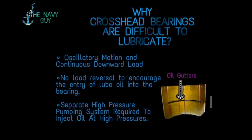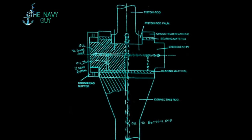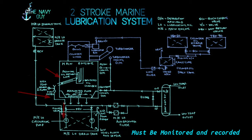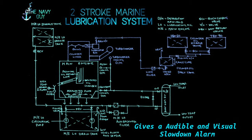A favorite interview question is: why are crosshead bearings difficult to lubricate? It is because of three reasons. Firstly, the oscillatory motion and continuous downward load with high sliding velocity makes formation of a hydrodynamic lubricating oil film difficult. Secondly, there is no load reversal to encourage entry of lube oil into the bearing, and rubbing speed is insufficient. Thirdly, a separate high-pressure pumping system is required to inject lube oil into the crosshead bearings. After lubricating, oil returns via a separate return line through a split pipe into a funnel going to the main engine lube oil drain tank. This line is fitted with a flow meter, temperature sensor, and alarm — as a safe watch-keeping practice it must be monitored and recorded daily. If oil temperature is above normal, a high temperature alarm is triggered, and if unattended, it will slow down the main engine.